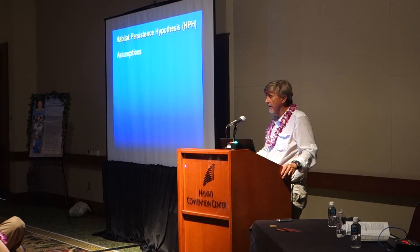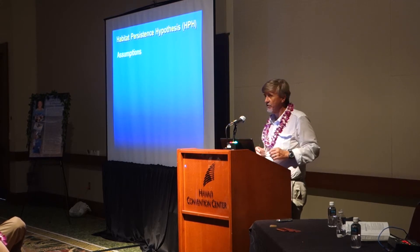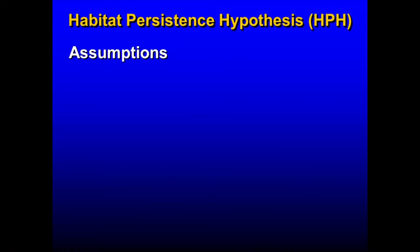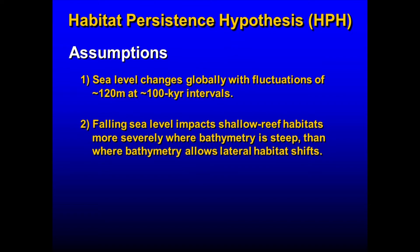Now that we've formalized it in a manuscript currently in review, we have six specific assumptions this hypothesis makes. One is that sea level changes globally with fluctuations on the order of about 100 to 120 meters at timescales of about 100,000 year intervals — there's lots of geological literature that supports this. The second assumption is that falling sea level impacts shallow reef habitats more severely where bathymetry is steep than where bathymetry allows lateral habitat shifts.